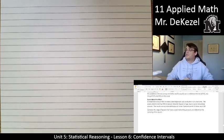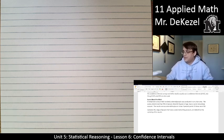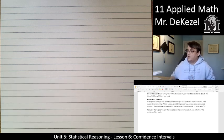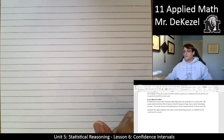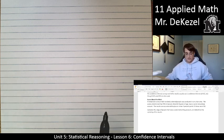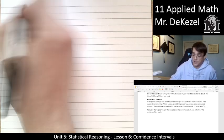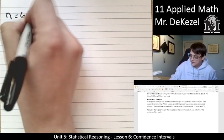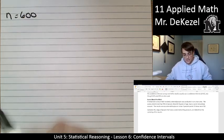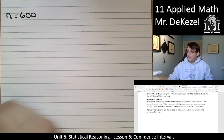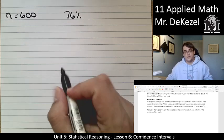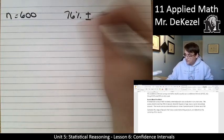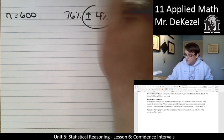A telephone survey of 600 randomly selected people was conducted in an urban area in a city. The survey determined that 76% of people from 18 to 34 years of age have a social networking account. The results are accurate within plus or minus 4 percentage points, 19 times out of 20. Essentially, what we're going to do is we're going to talk about margin of error, confidence interval, and confidence level throughout here. So in this survey, we have a sample size N of 600. And it said that 76% of people had a social networking account, plus or minus 4%. So this right here is our margin of error.